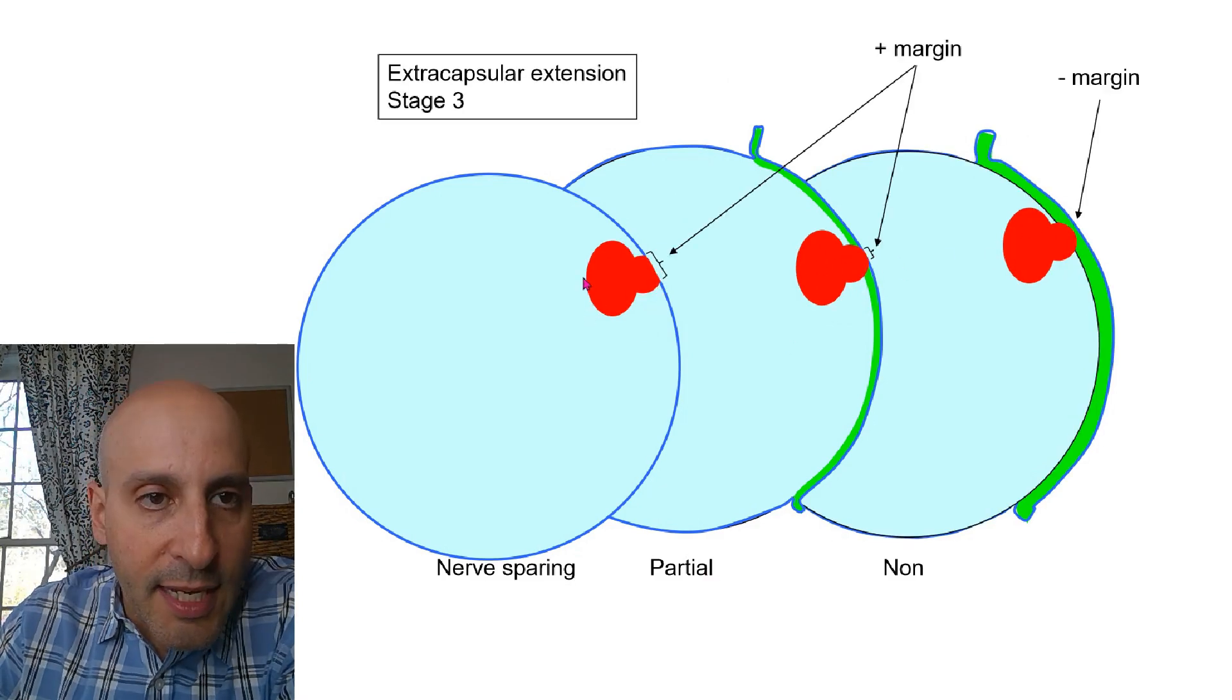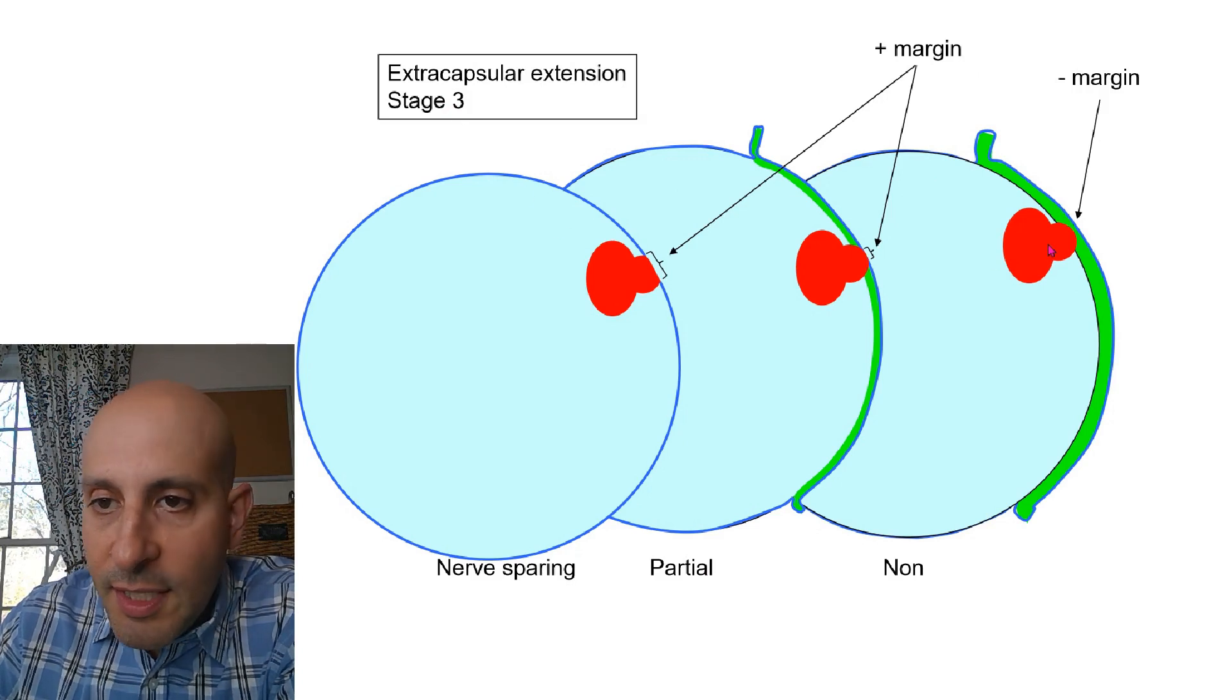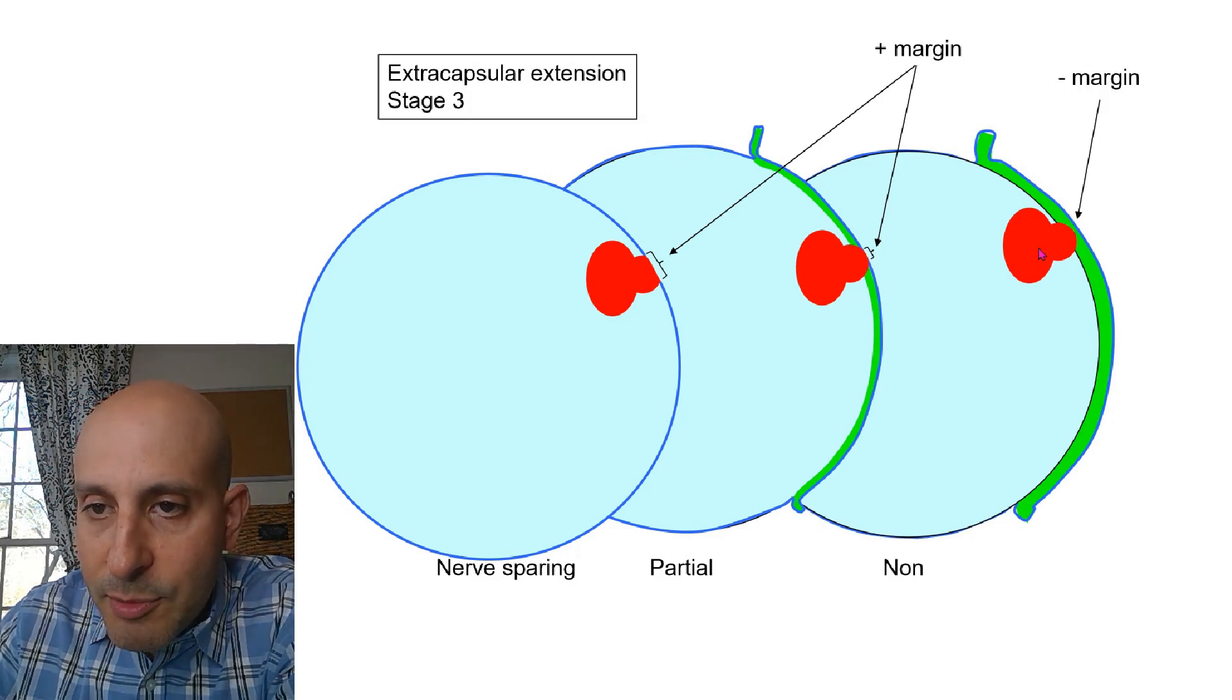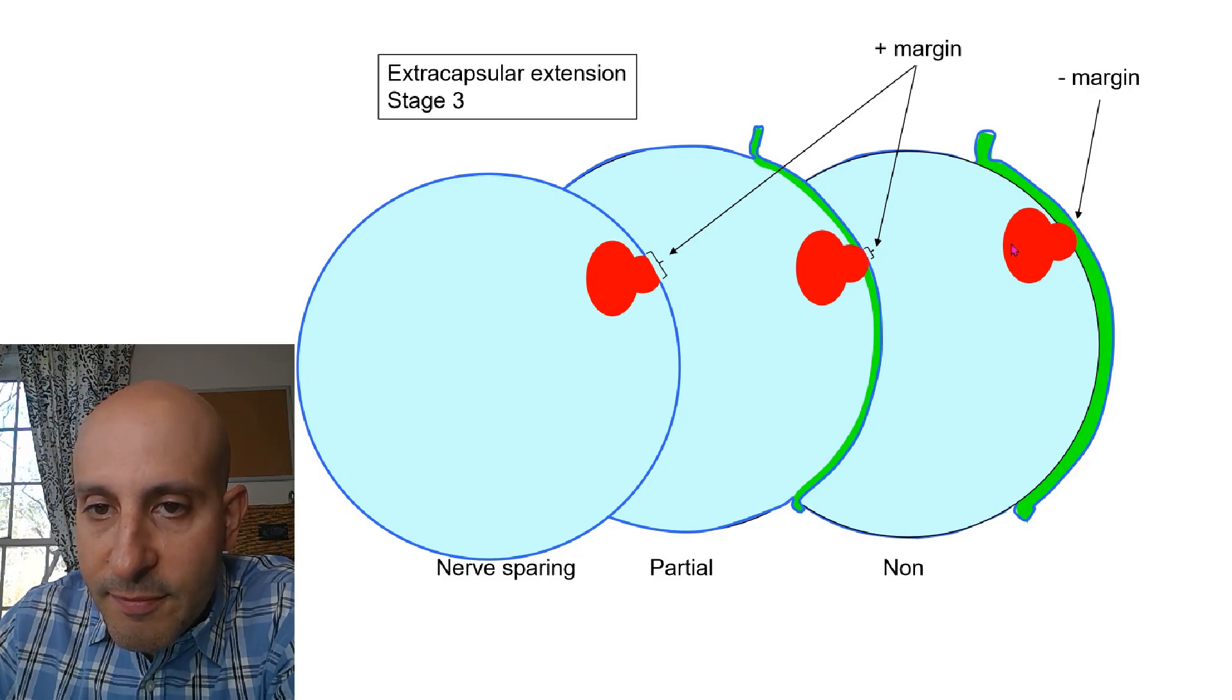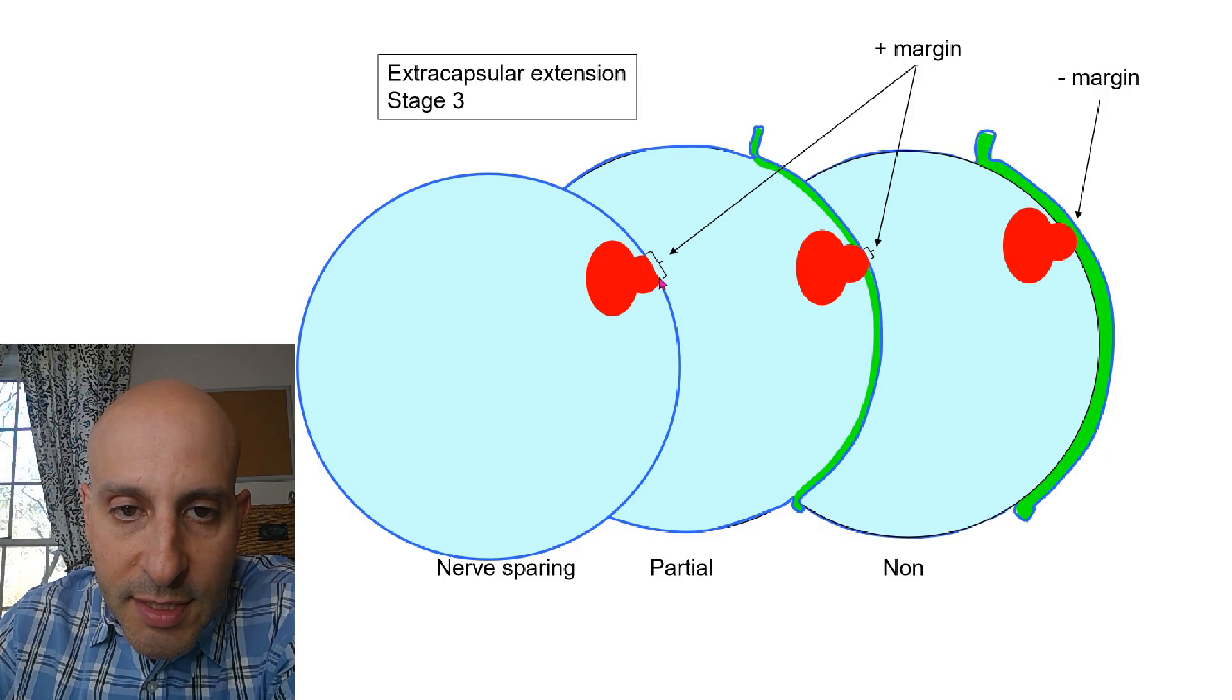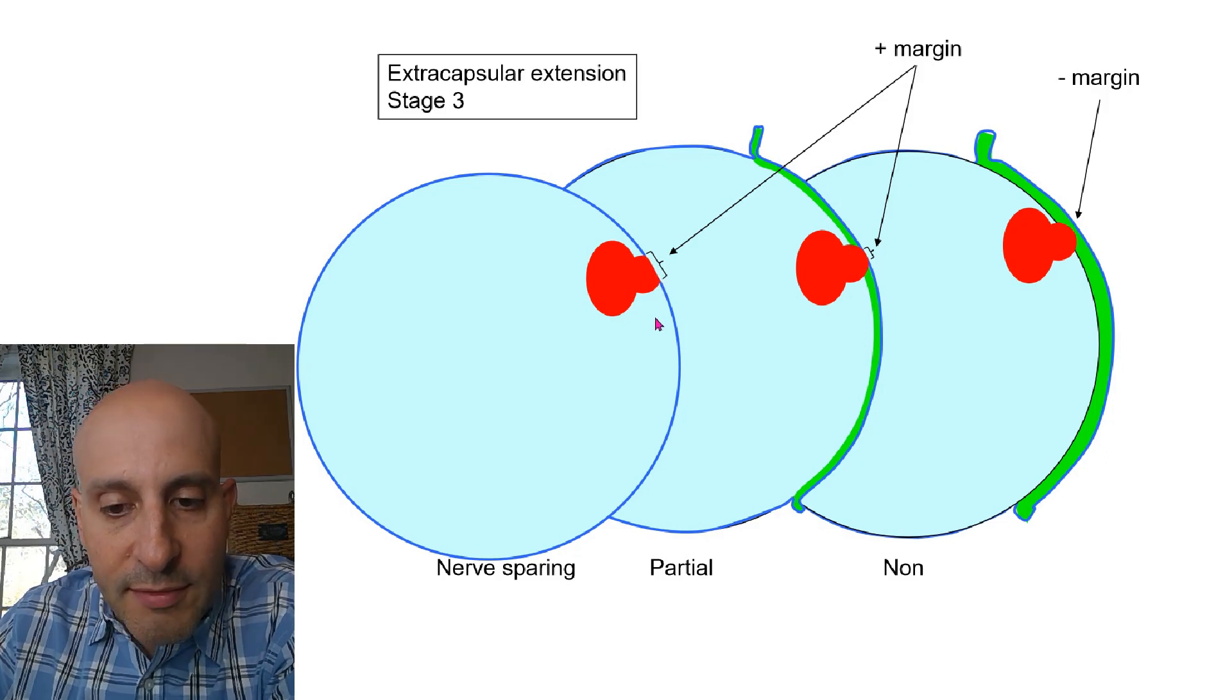If the patient has stage 3 cancer and it's bulging through the capsule, as long as the surgeon takes a slightly wider path, that margin will be negative. In this case, the margin is positive. And in this case, the margin is significantly positive.